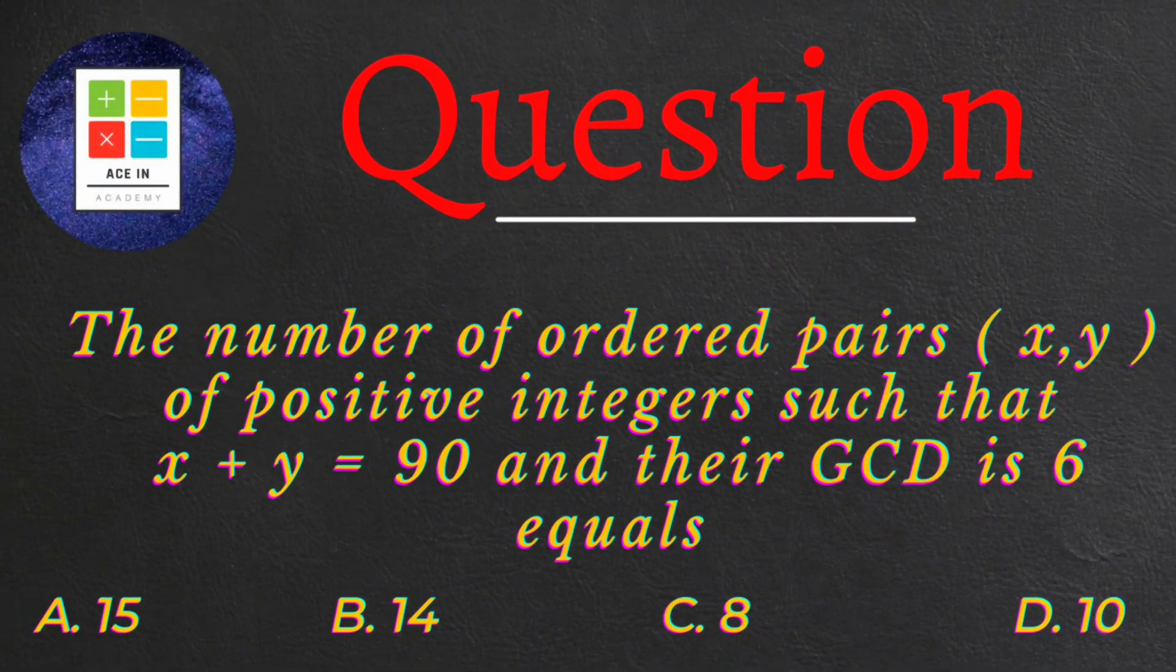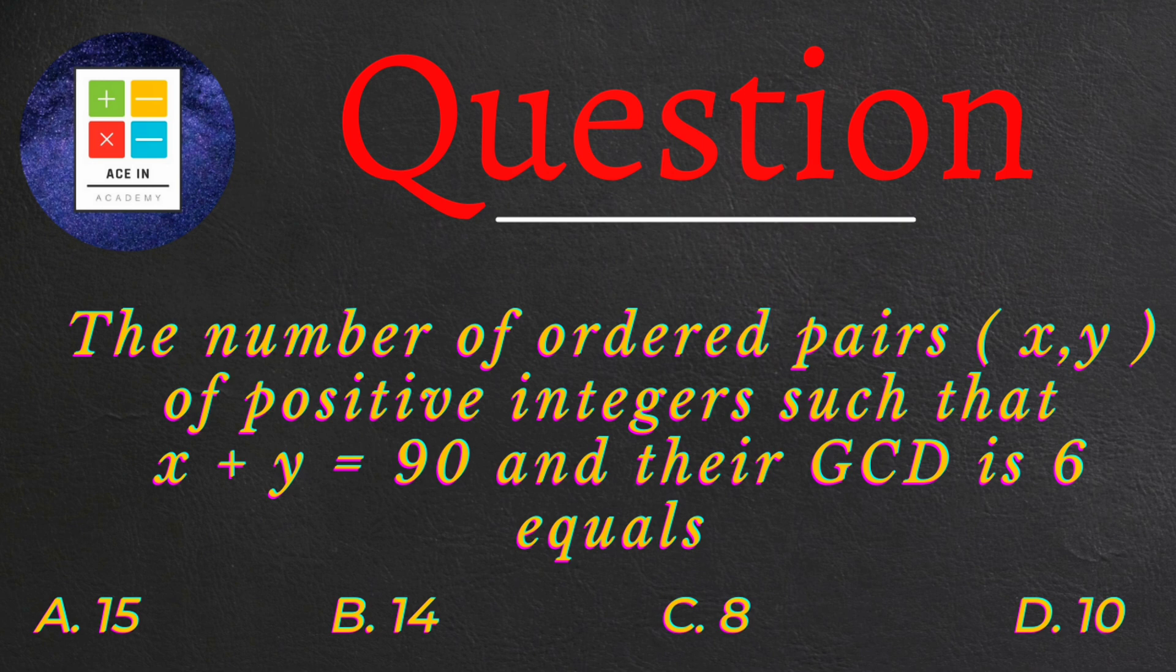The question is as follows: the number of ordered pairs (x, y) of positive integers such that x + y = 90 and their GCD is 6 equals. We are provided four options: A. 15, B. 14, C. 8, and D. 10.